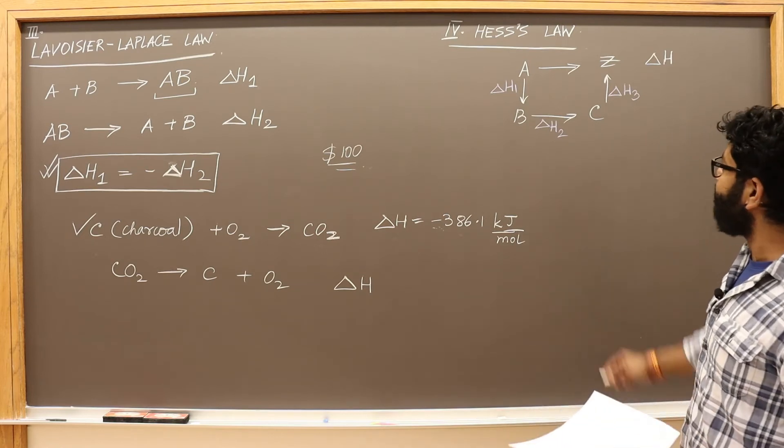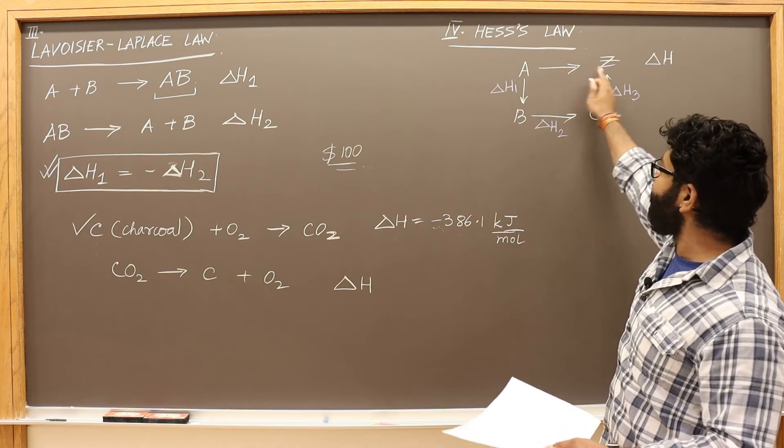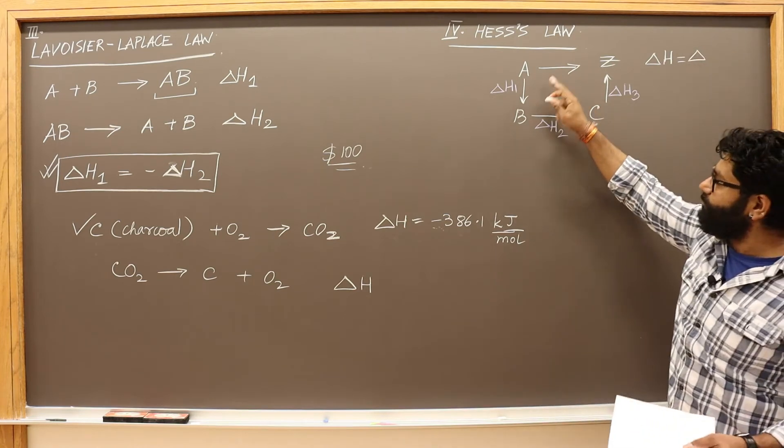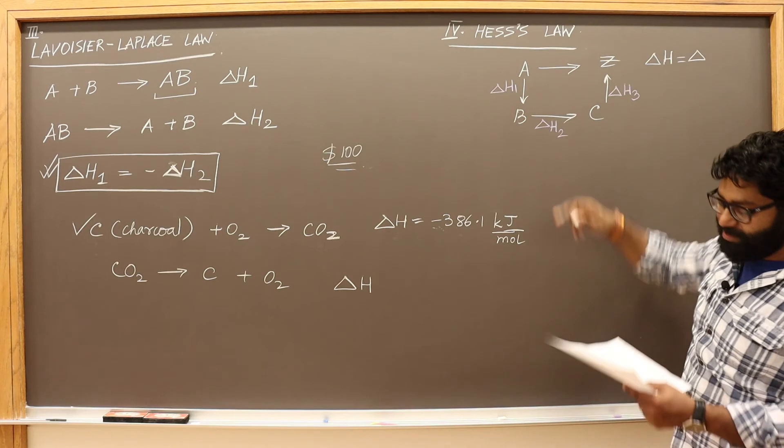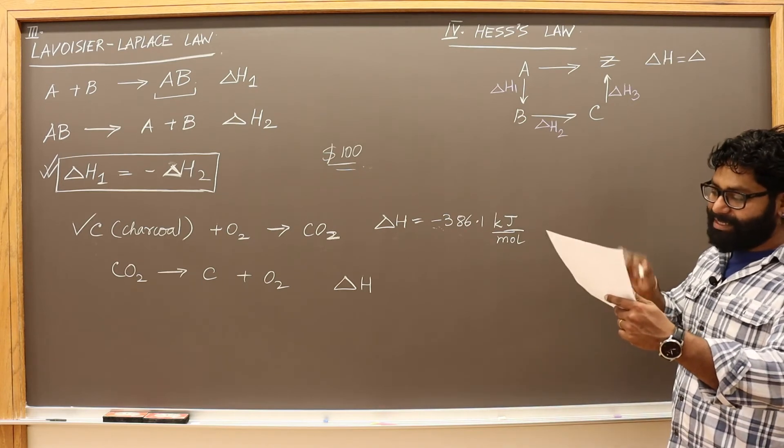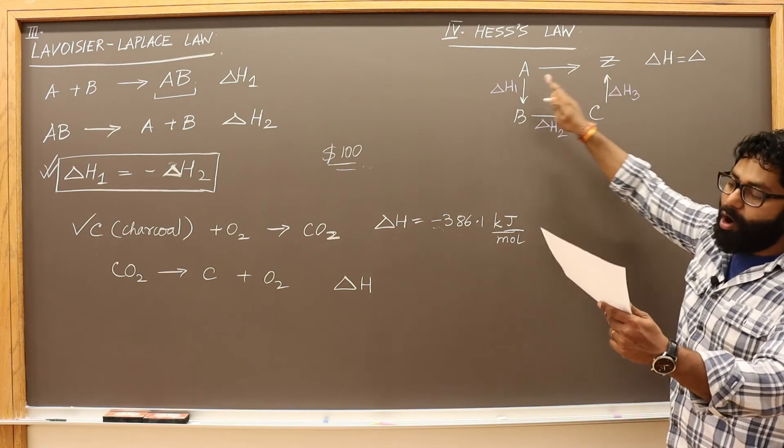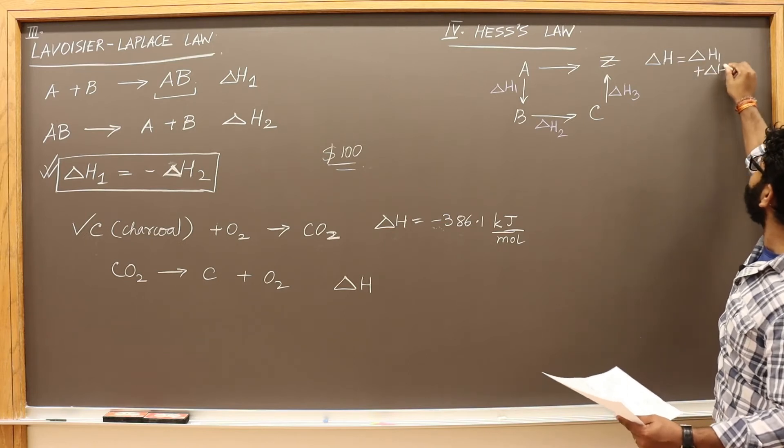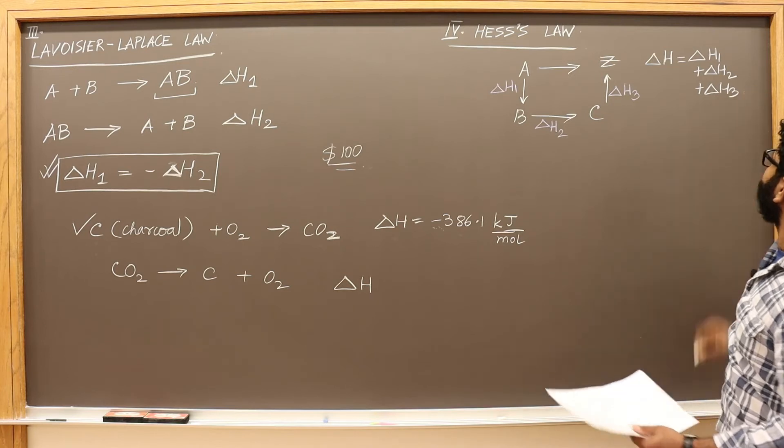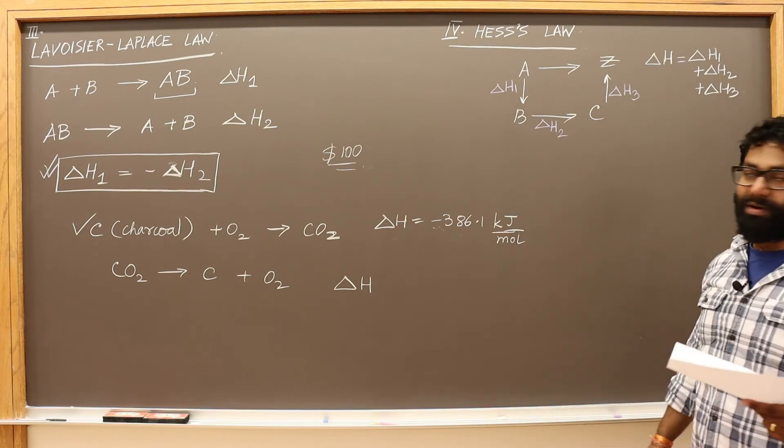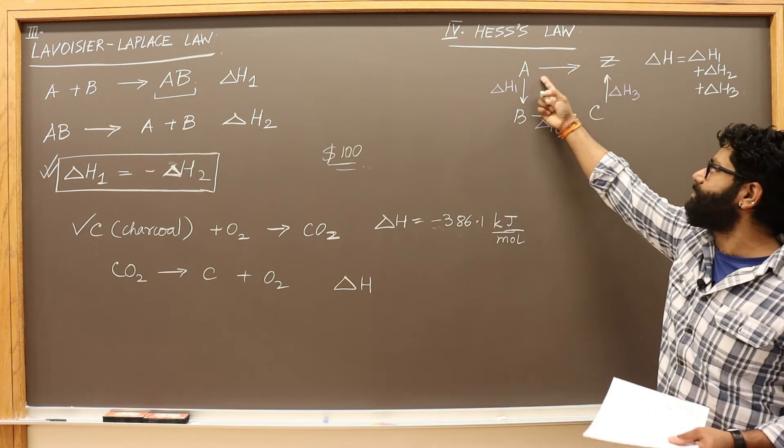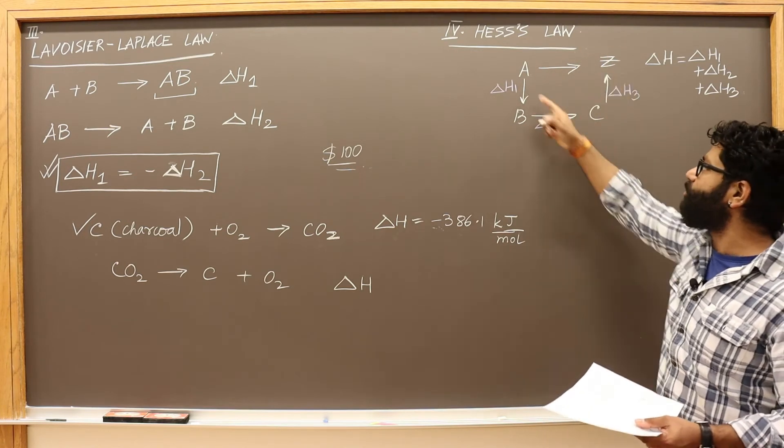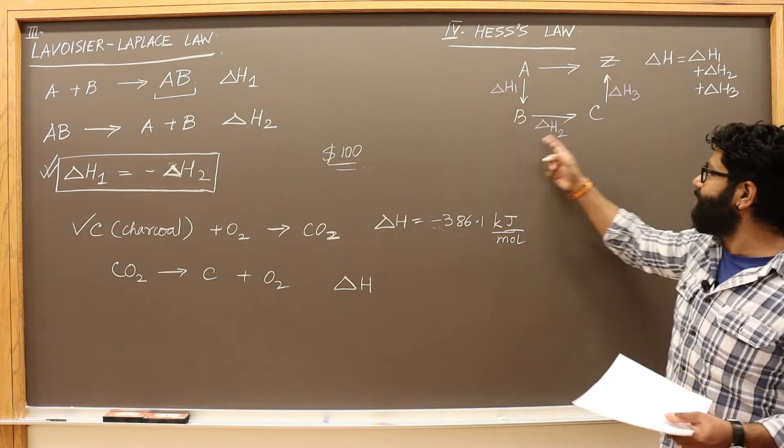What Hess's law states is when the initial and the final are same, like if you're going from A to Z, the delta H will be exactly same if you go in multiple steps. The delta is the same whether the reaction takes place in one step or several steps. This is Hess's law, extremely important, because it's not always easy to find out to go from one compound to another, but it's sometimes more easier to go into several steps, calculating this might be easier.